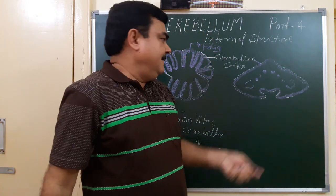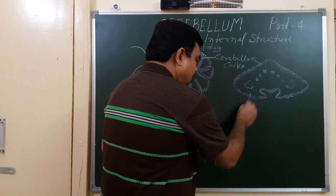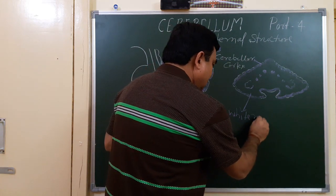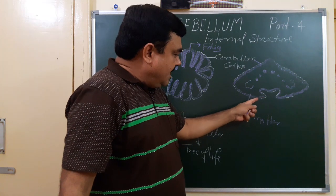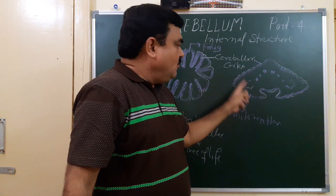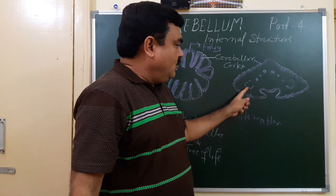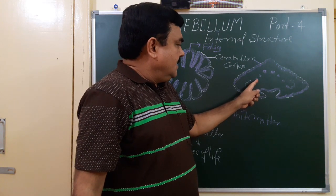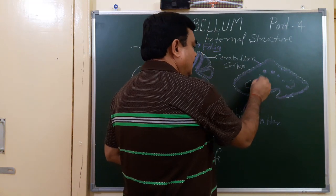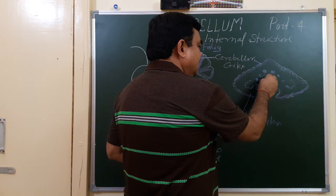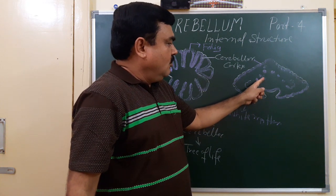There are several nuclei present within the substance of the white matter. The white matter is made up of nerve fibers, and the gray matter lies in the peripheral part as the cerebellar cortex and also as nuclei. There are four nuclei: dentate nucleus, globosus, emboliform, and fastigial.